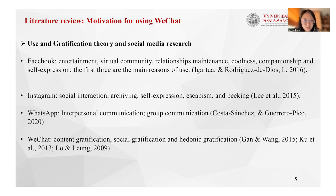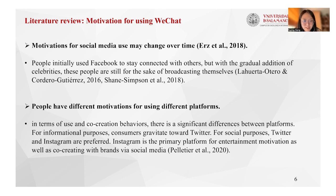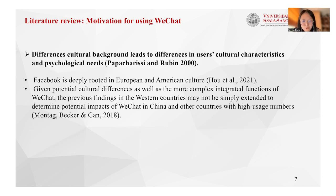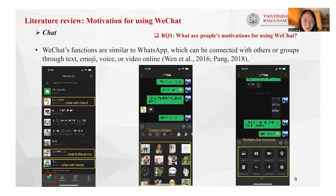Different uses of internet social platforms reflect different motivations. For example, people use Facebook for entertainment, virtual community, and relationship maintenance; Instagram for social interaction and self-expression; and WhatsApp for communication. Motivations for using social media may change over time, vary across platforms, and differ based on cultural background and psychological needs. This leads to the first research question: what are people's motivations for using WeChat?